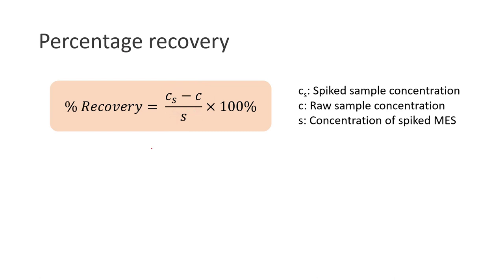So if we expand this equation a little bit, this will be equal to the concentration of your raw sample plus the spike concentration that we obtain experimentally, minus the concentration of the raw sample, divided by the spike concentration that we plant, multiplied by 100 percent. So the concentration of raw sample will cancel each other, and then we will be left with the spike concentration obtained experimentally and the spike concentration that we plant, multiplied by 100 percent.